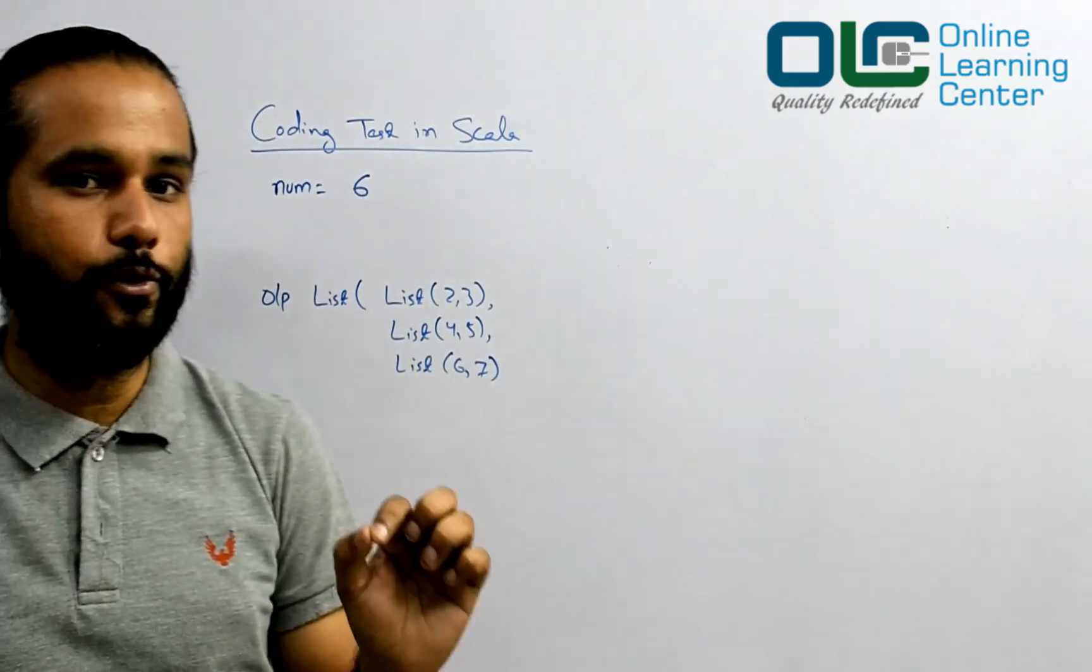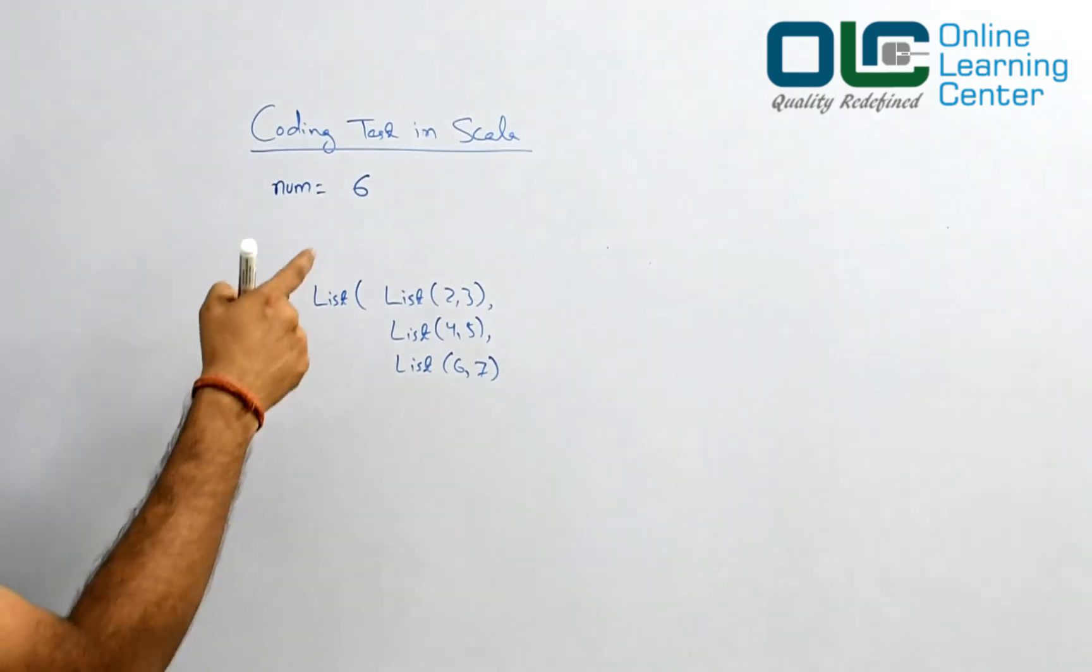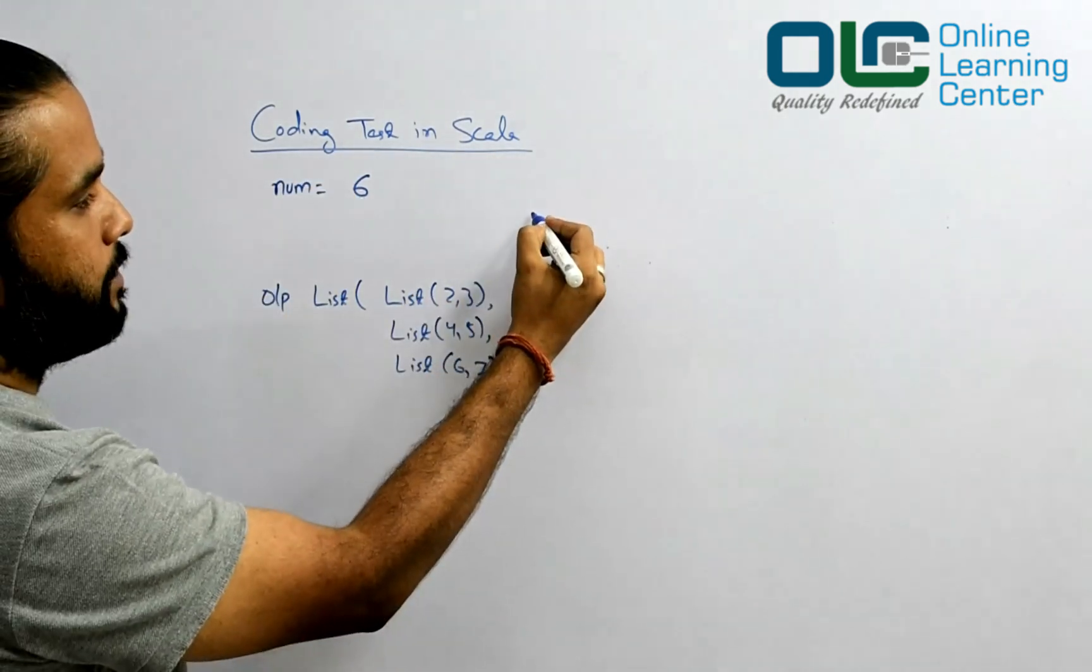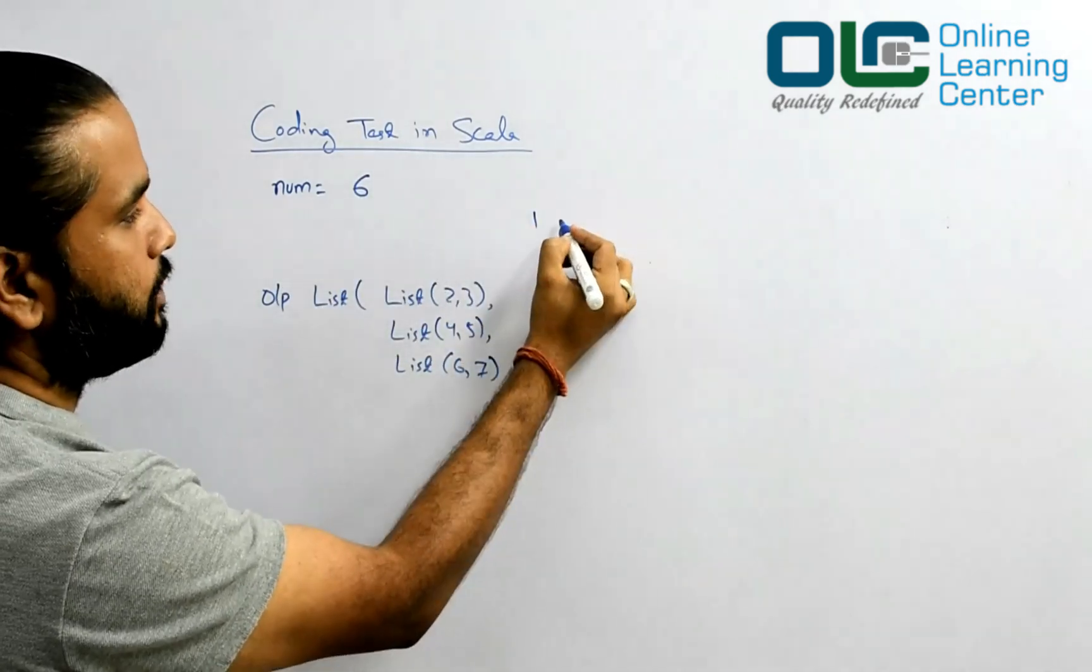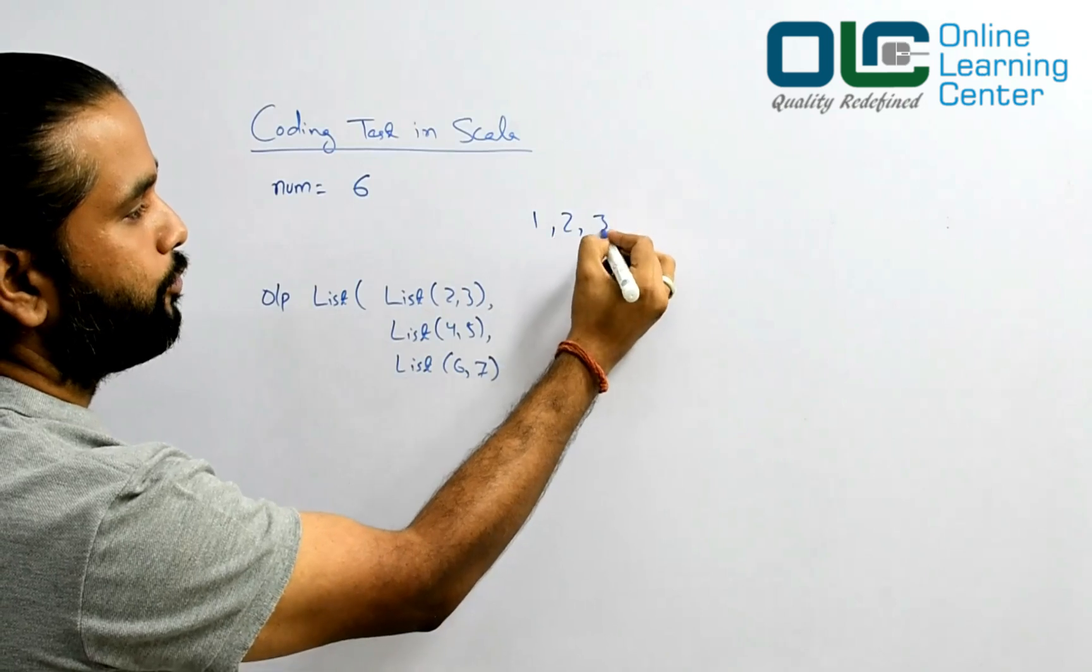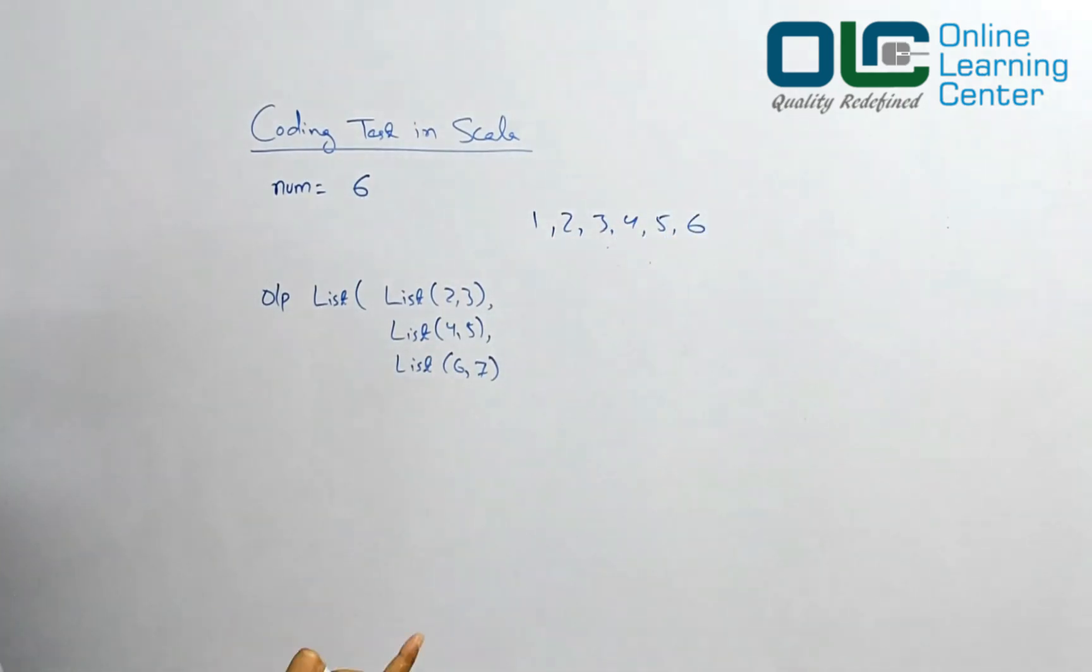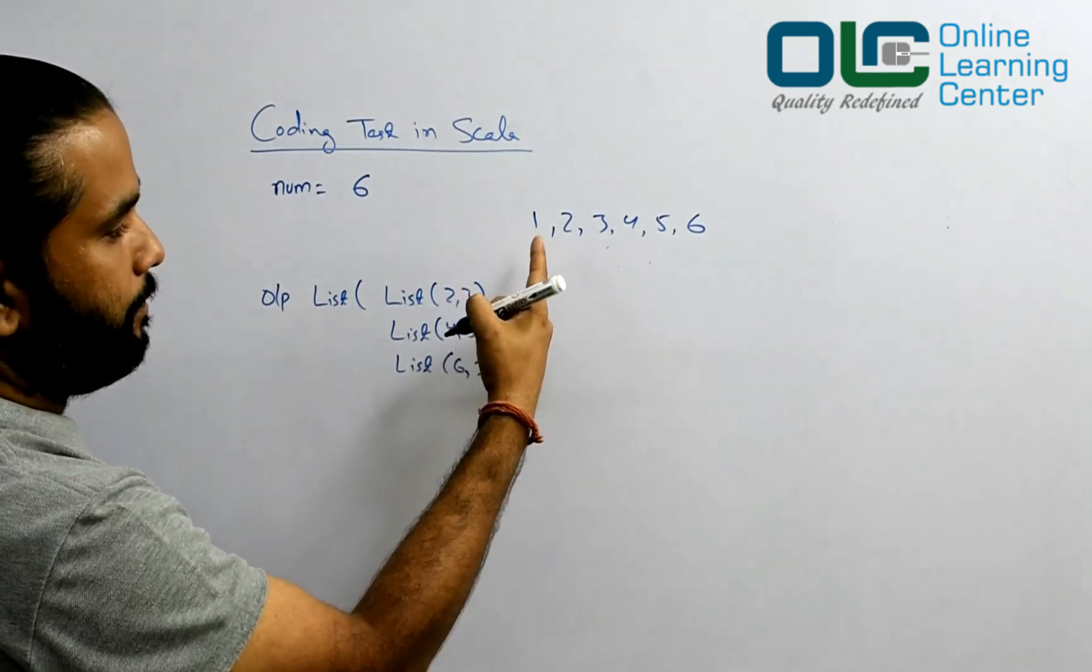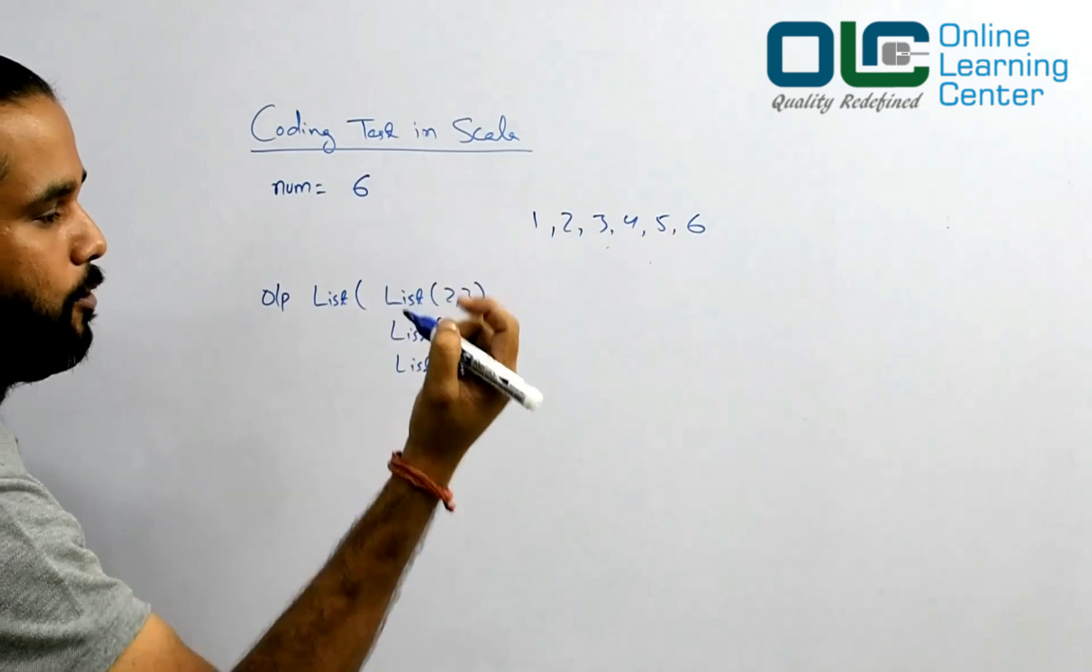I'll give you some hints so that you can think through what exactly should be done. Now see, given six, what you could probably do is maybe create a list from one to six, right? So what do you get: one, two, three, four, five, six. And then you may be interested to increment all of these numbers by one, so probably use map or something, right?